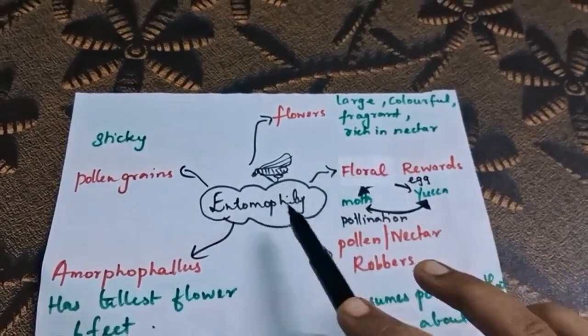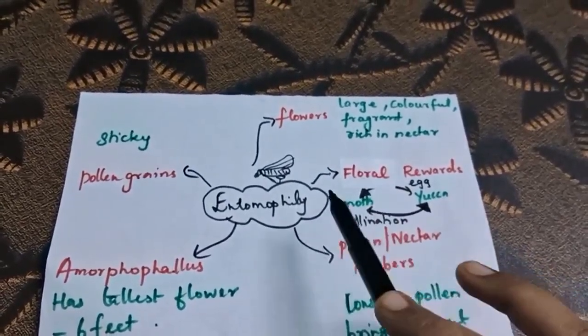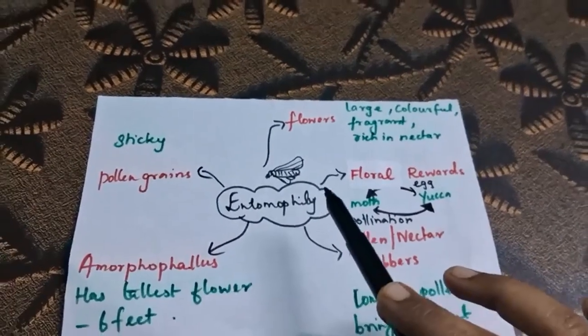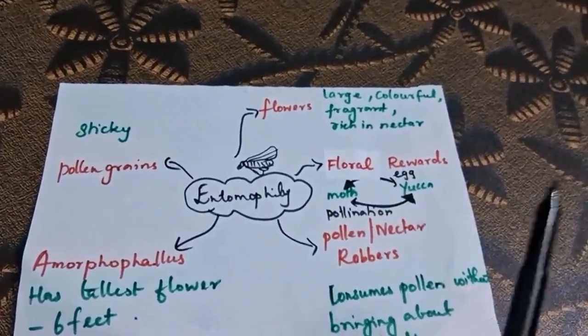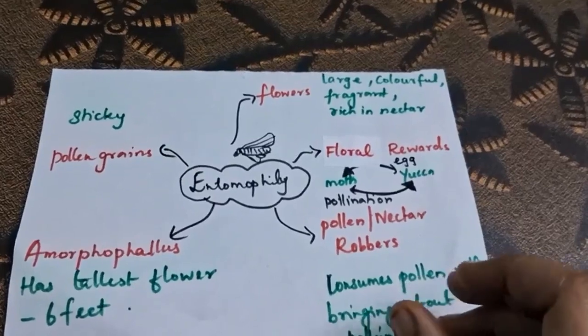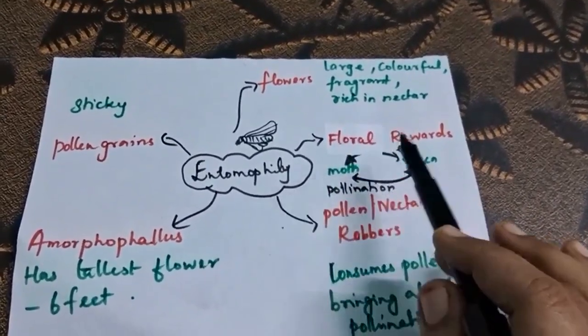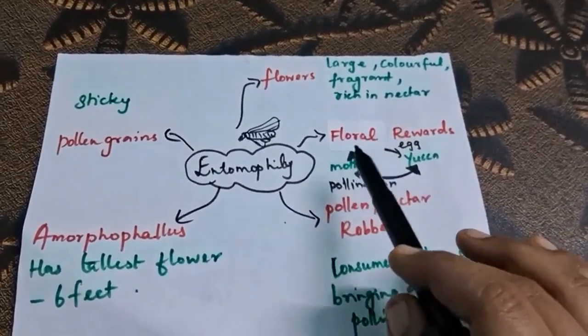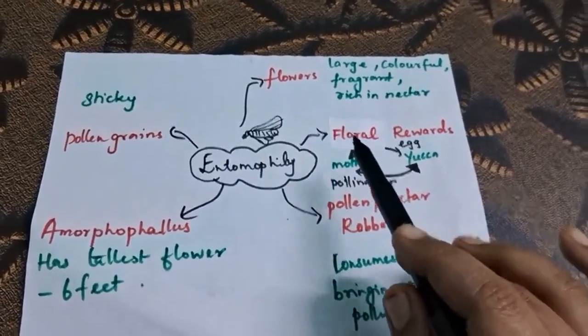The second point is floral rewards. The flower should provide a safe and secure place for insects. The flower will have space for laying eggs, so insects will approach the flower.